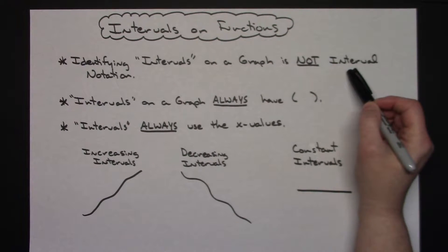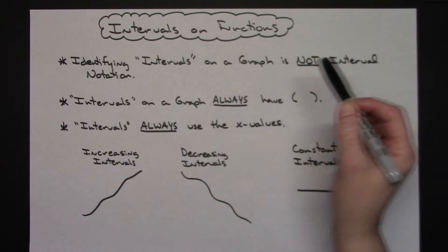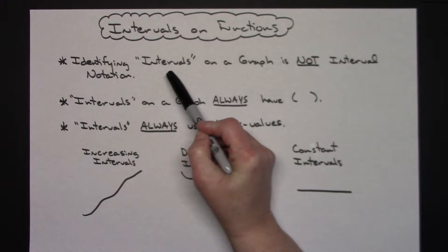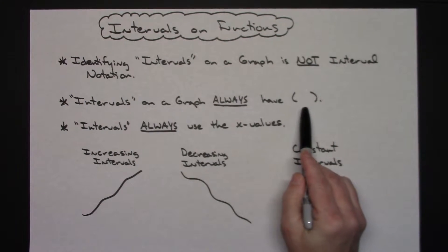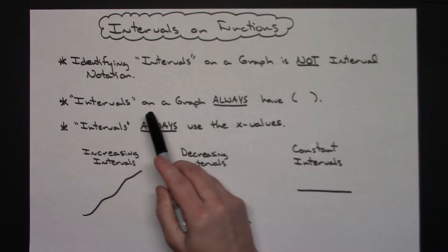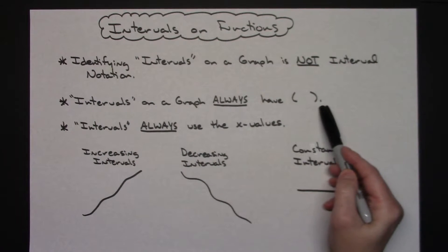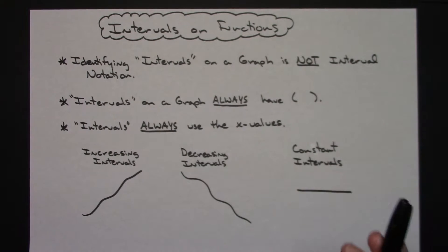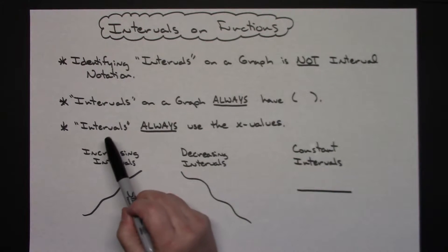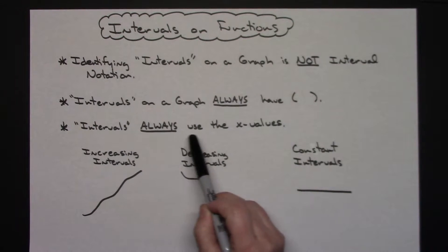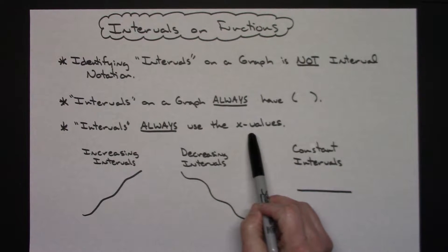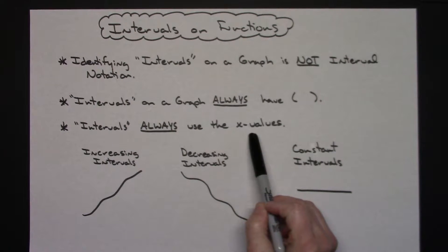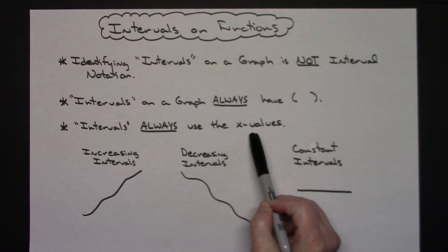Interval notation has both square brackets and curvy brackets, but when we're identifying intervals on a graph, we're always going to use curvy brackets. So intervals on a graph always have curvy brackets, because we're just identifying that this section of the graph is increasing, decreasing, or whatever. Another good thing to remember is that your intervals always use the x values from the graph — if you are looking at the y-axis, then you're looking at the wrong values.